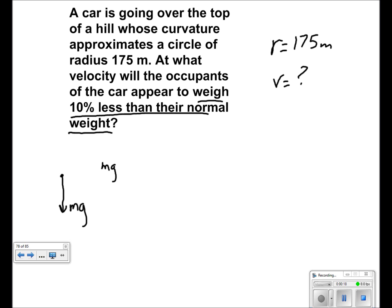In order to find the apparent weight, we subtract one-tenth of the weight from their normal weight, which is 1 mg, to get 0.9 mg.